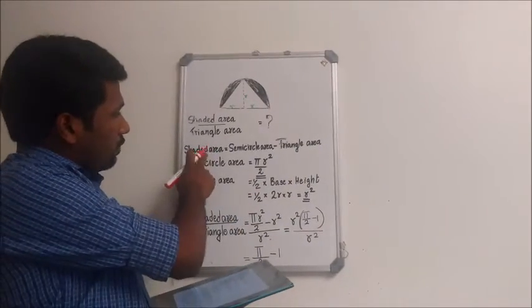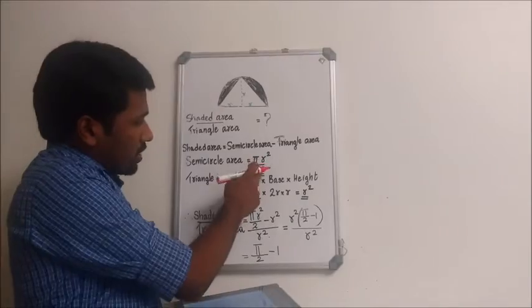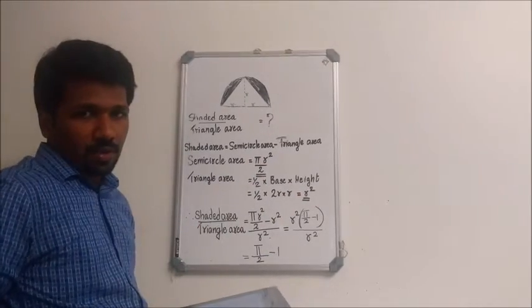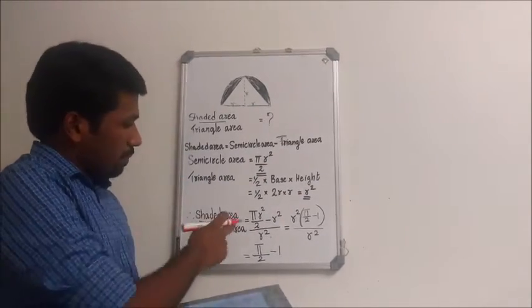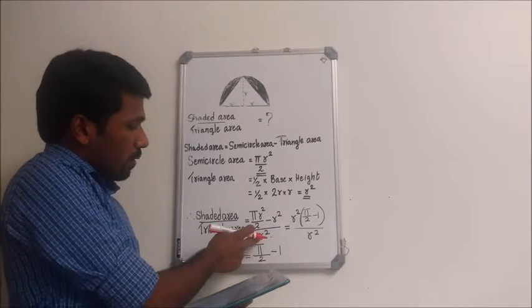That means the area of this shaded region will be π r squared by 2 minus r squared. So our required ratio will be π r squared by 2 minus r squared by r squared.